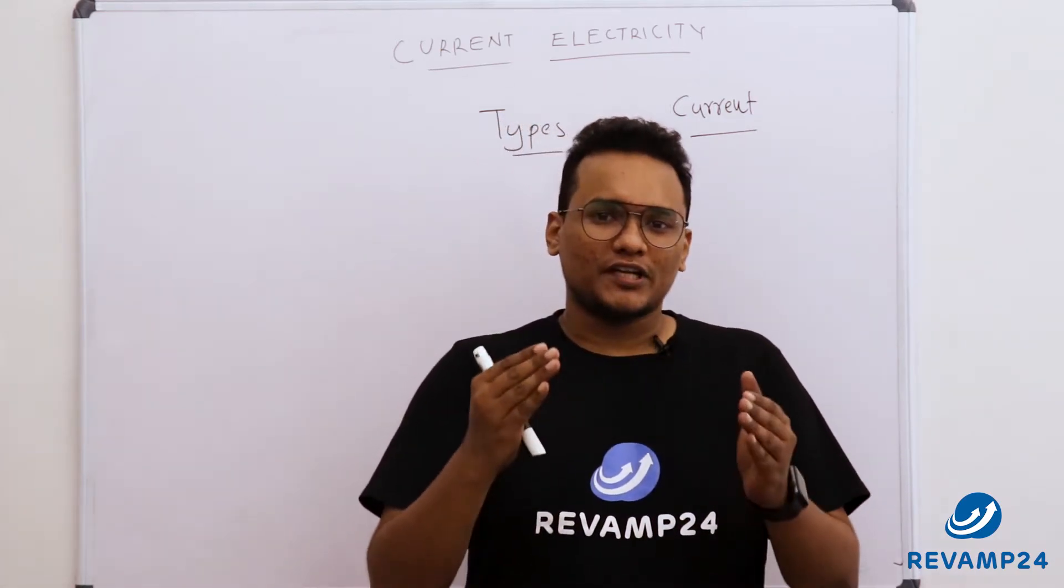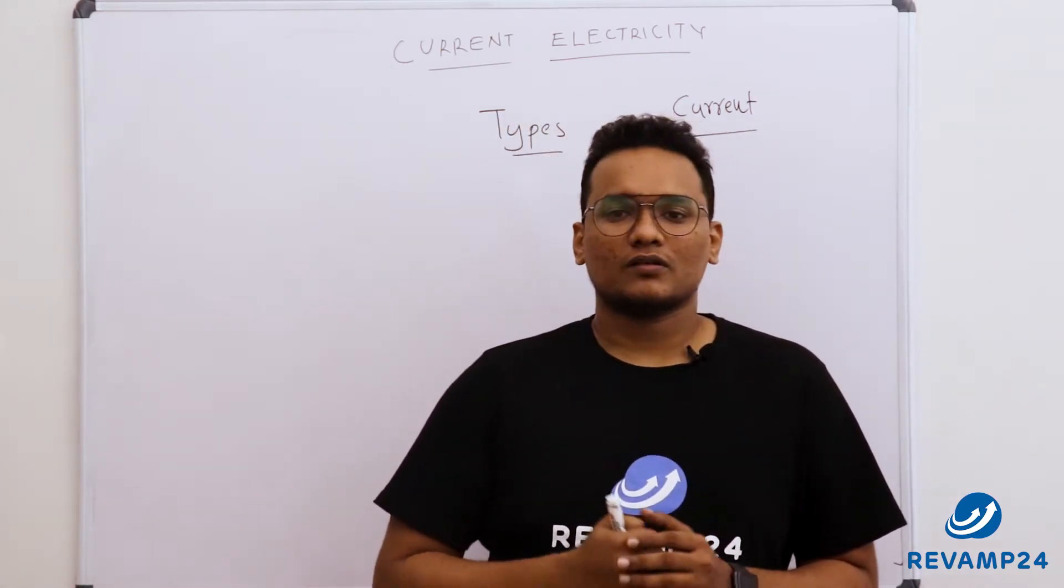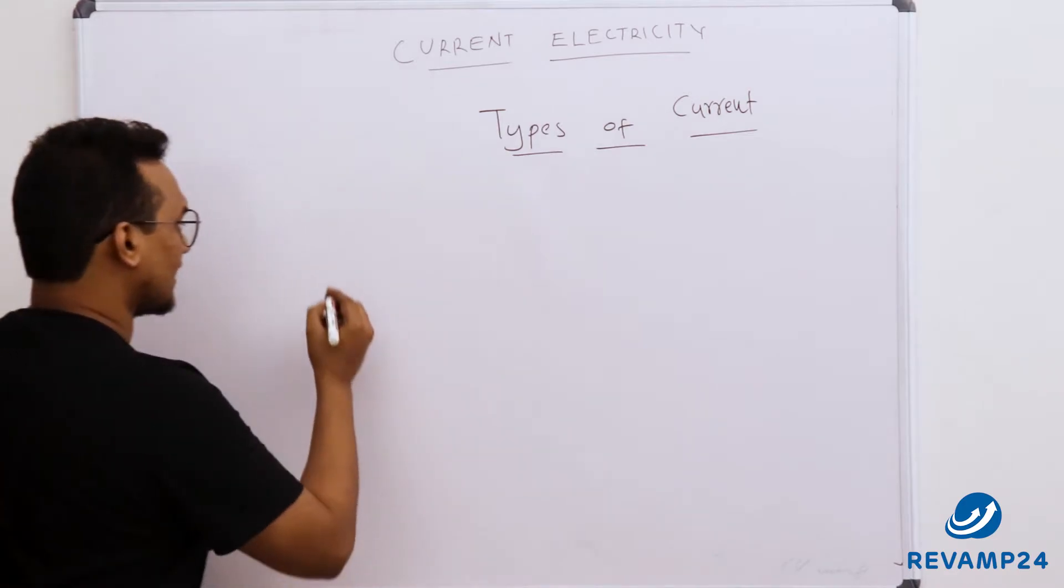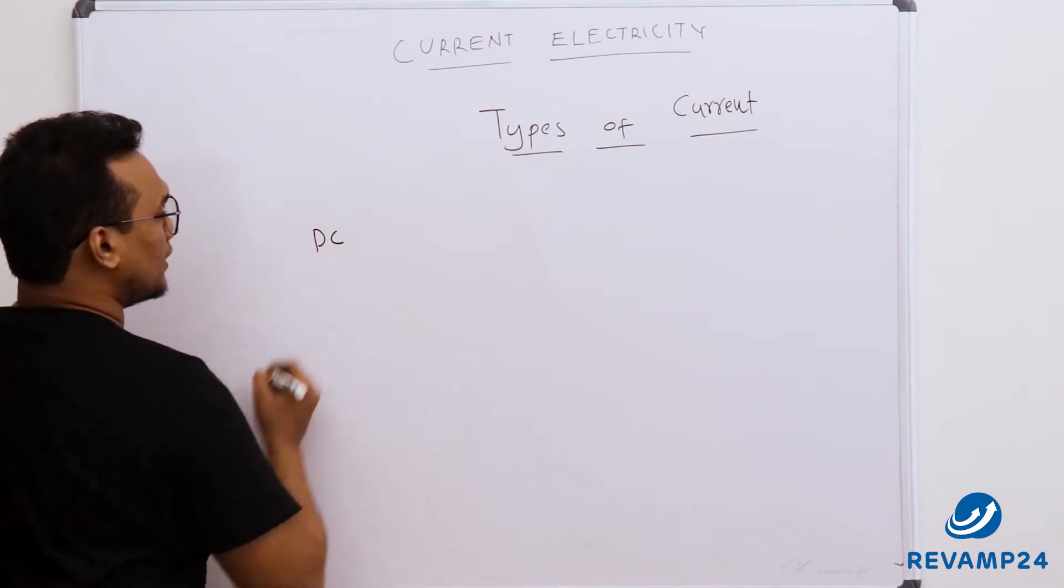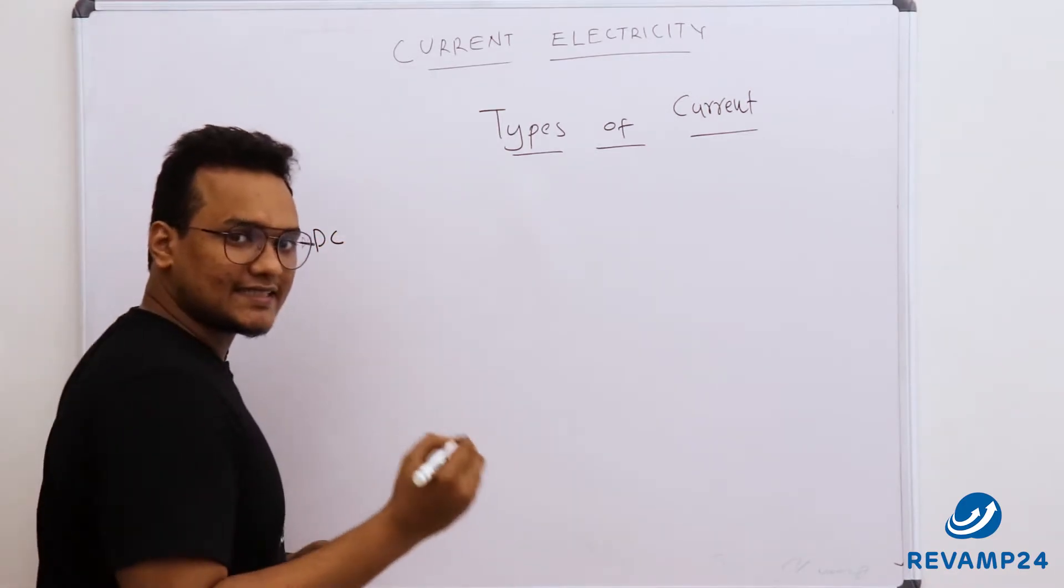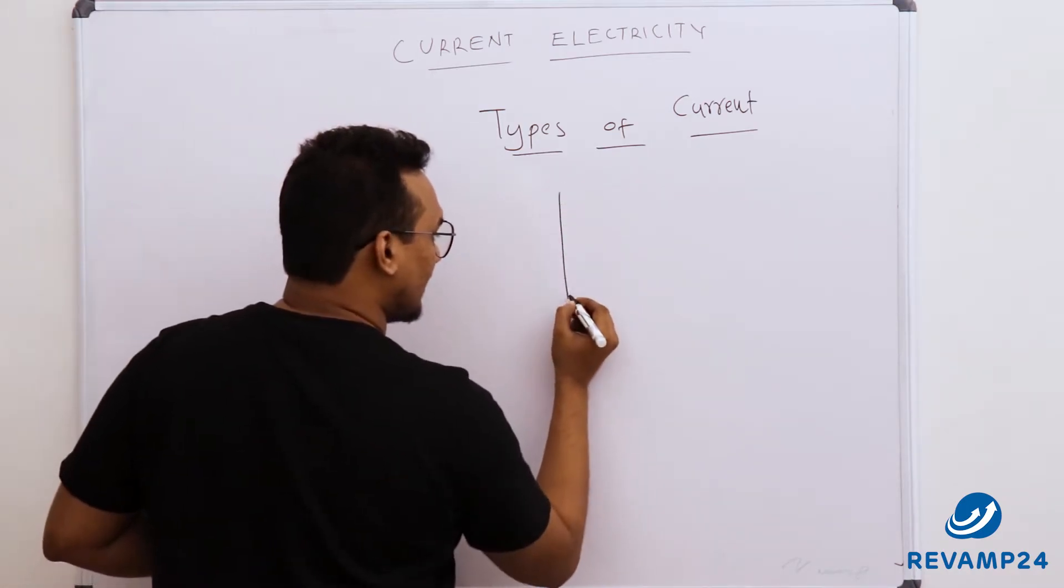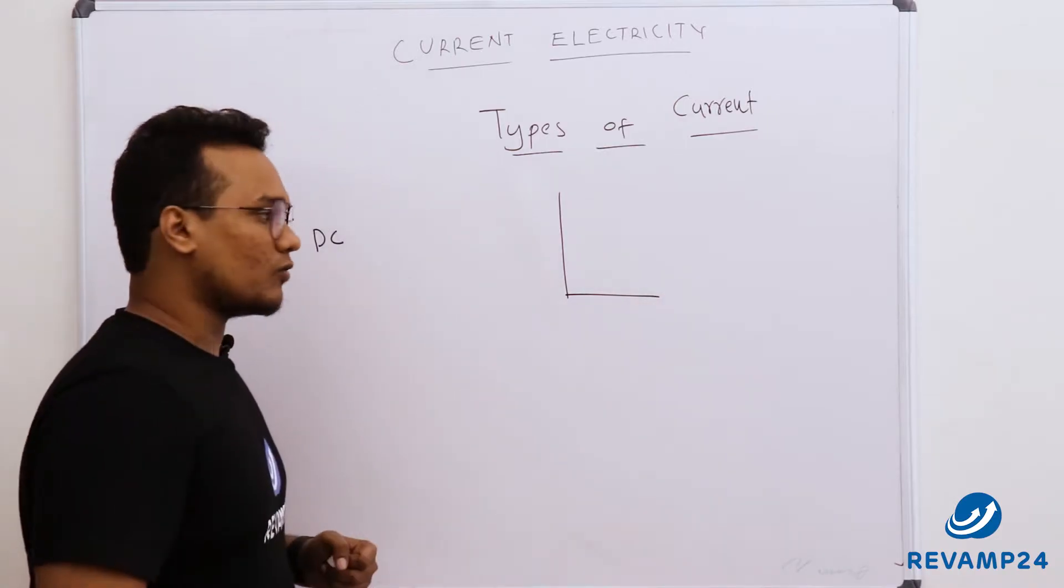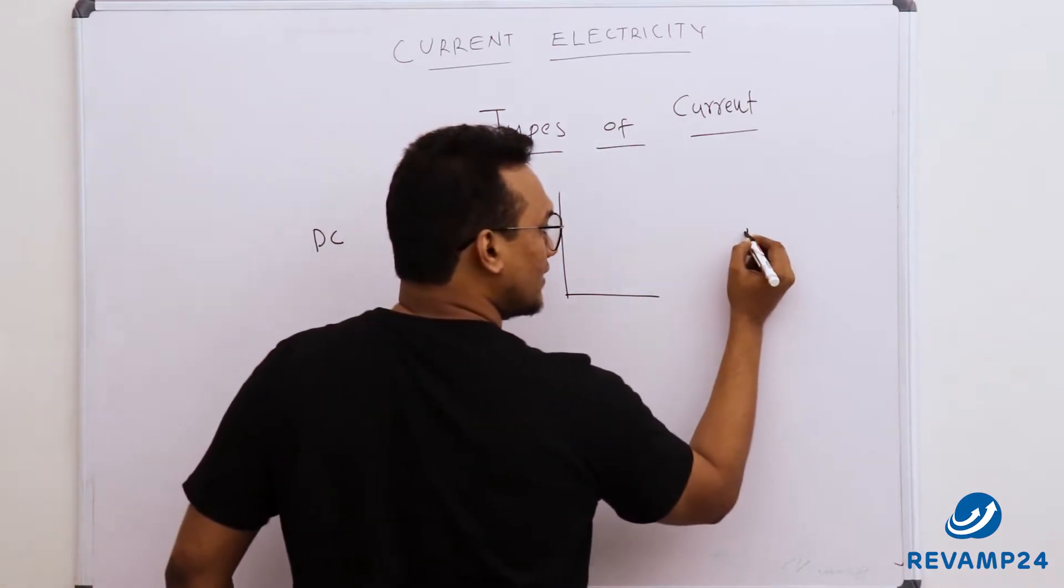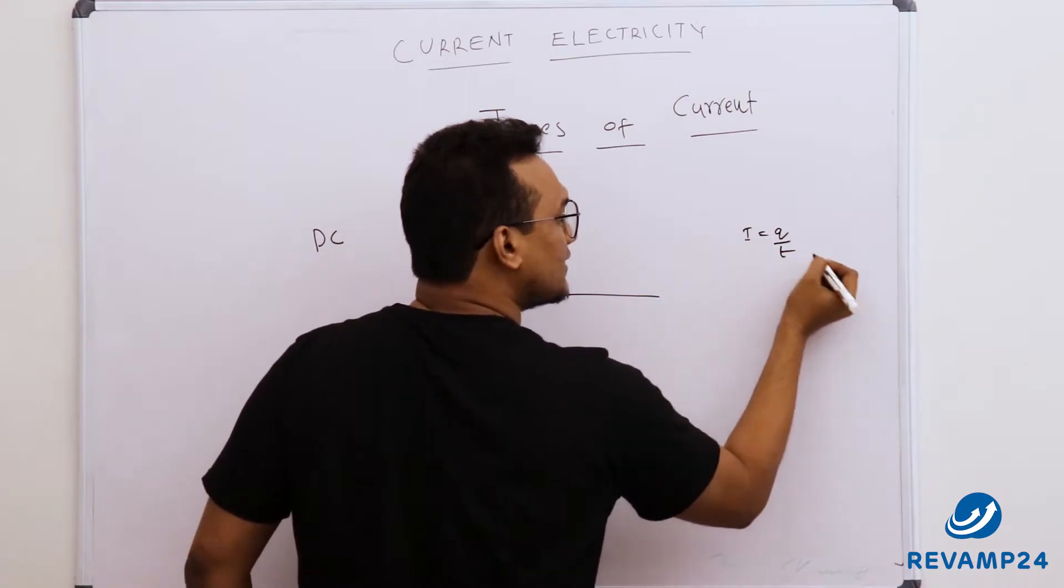In this video I will explain different types of current. So first one is DC current. What do we mean by DC current? The full form of DC is nothing but direct current. In DC current, the intensity of current, what is intensity of current? i equals Q by T, is constant.